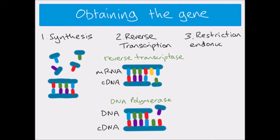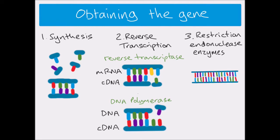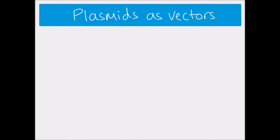The third method of obtaining the gene uses enzymes called restriction endonucleases. The basic idea is that you have your section of DNA, you know where the gene is, and you know the sequence on either side of it. You use the enzymes to cut above and below where the gene is and then remove it.